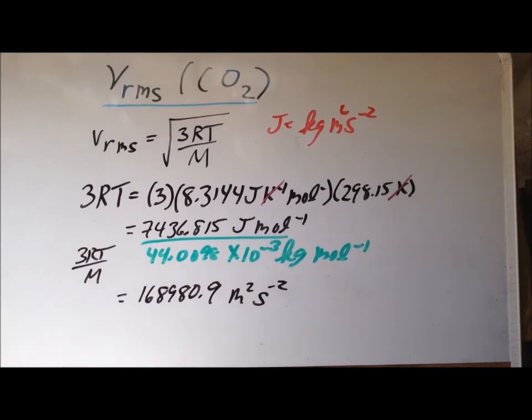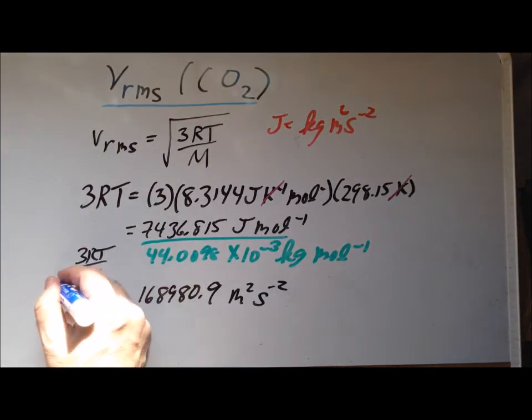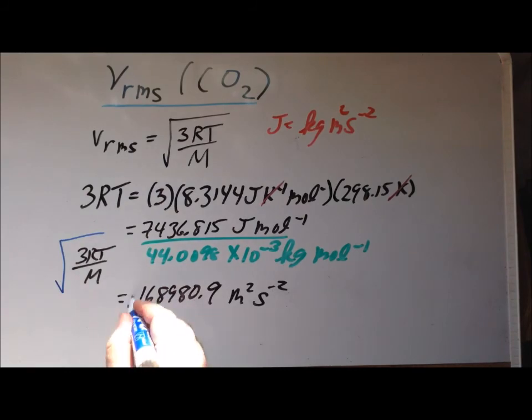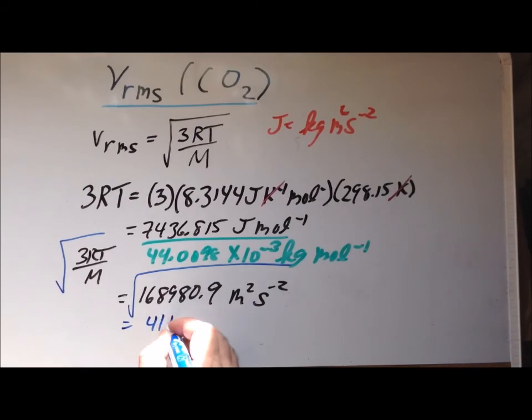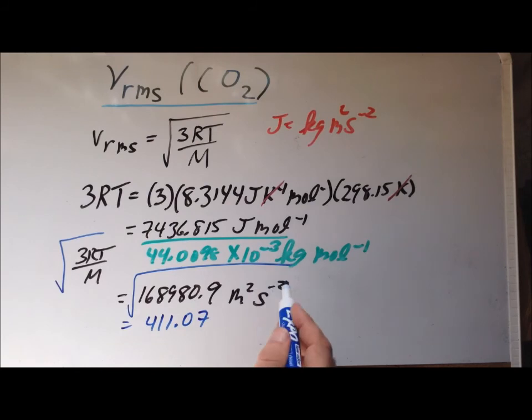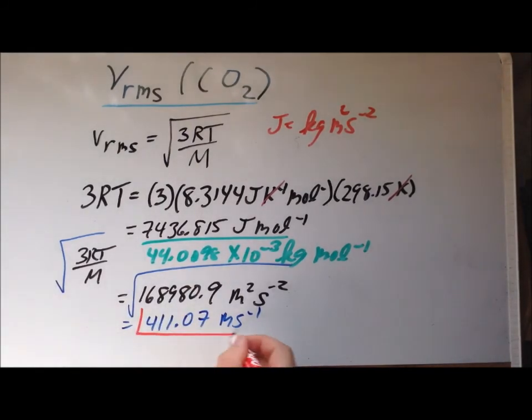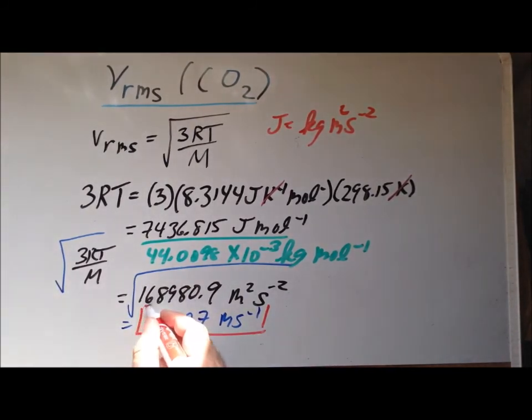Our last step to find the root mean square speed is to take the square root of each of these expressions. And when we do that, we get a result of 411.07. And as far as units, the square root of meters squared per second squared is meters per second, which are excellent units for velocity. This tells us that the root mean square of carbon dioxide at 298.15 kelvins is going to be 411.07 meters per second.